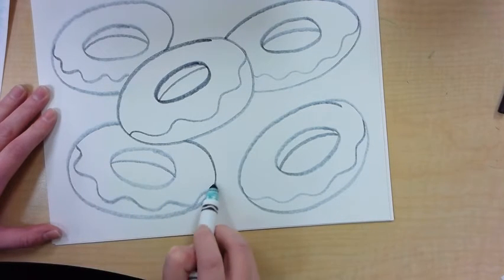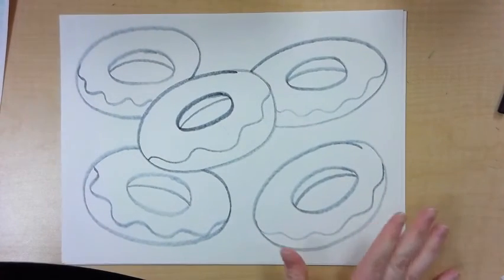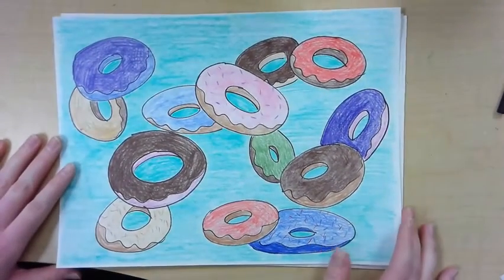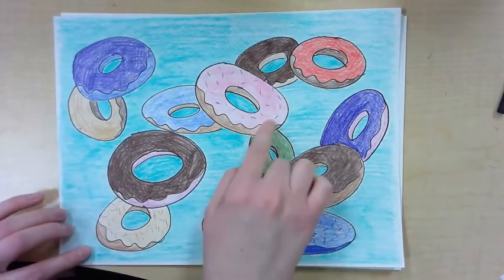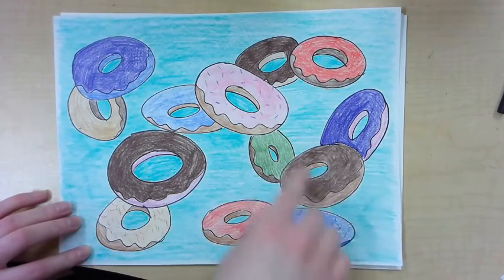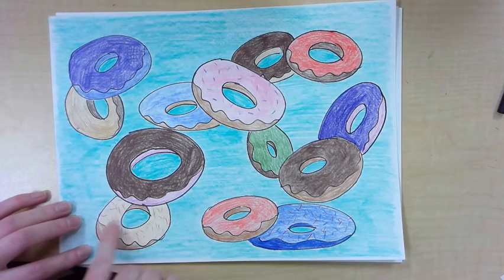The last step is to add color. And while you're coloring your doughnuts, think about what colors you want to use. I use bright colors for the frosting and kind of brown or other flavors for the dough part of the doughnut.